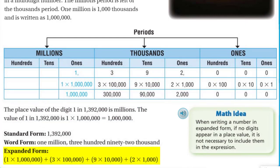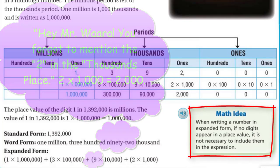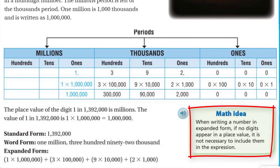And then we have expanded form. Expanded form literally means what it suggests — expanded means to make larger, almost to make longer, to stretch it out. We have one times one million — the place the 1 is in — plus three times one hundred thousand, since the digit 3 is in the hundred thousands place, plus nine times ten thousand, since the 9 is in the ten thousands place. Pretty self-explanatory.